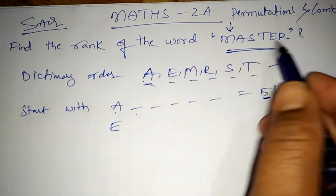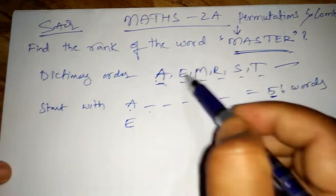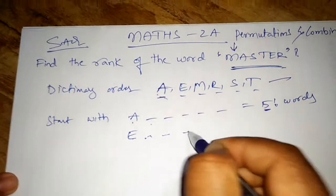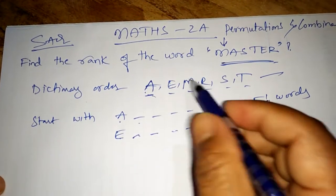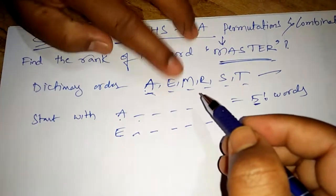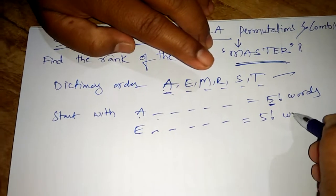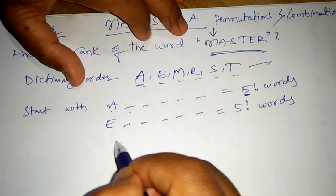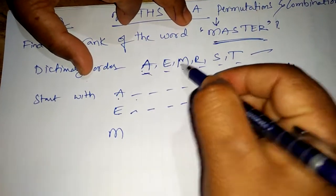The next letter after A in our list is E. E is not matching our word MASTER, whose first letter is M. So we leave the five gaps — five remaining letters can fill them in 5! ways. Next we come to M, which matches our word.